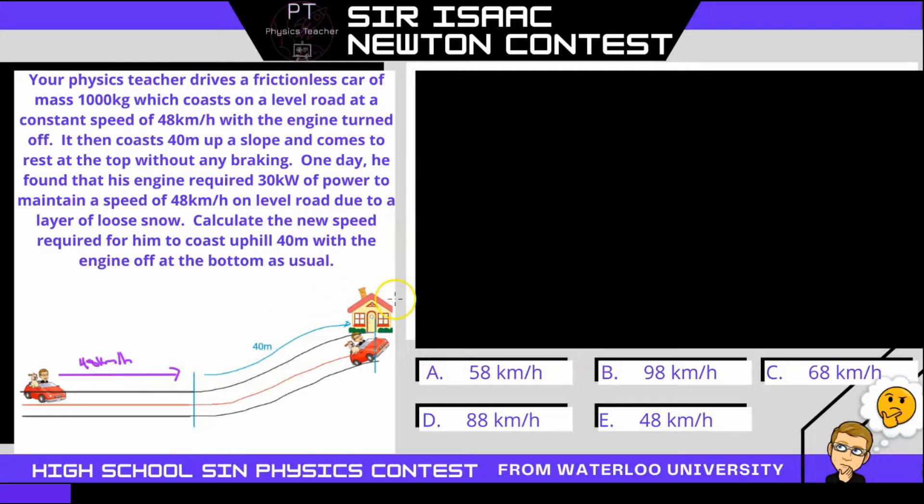It coasts up a 40 meter slope and comes to a perfect rest at the stop without any braking. One day he found that his engine required 30 kilowatts of power just to maintain this 48 kilometers per hour speed on the level road due to a layer of loose snow. Calculate the new speed required to coast up this 40 meter hill with the engine off as usual.